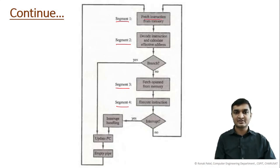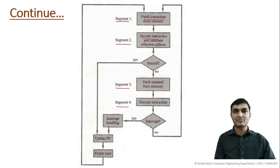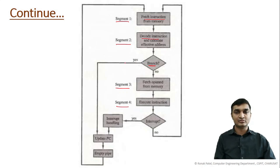Looking at the flowchart: segment one fetches the instruction from memory, segment two decodes the instruction. If there is a branch — a program control instruction that changes the program counter — it affects the pipeline. In a pipeline, instructions are executed one after another sequentially, but a branch instruction changes the flow and affects the pipeline. We will discuss this in more detail in the next video.